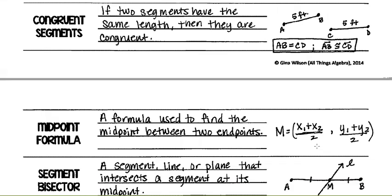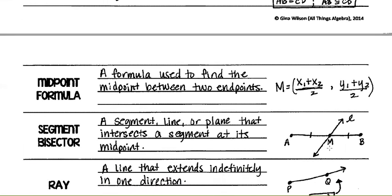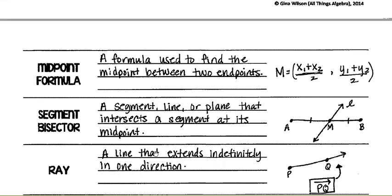Segment bisector: a segment, line, or plane that intersects a segment at its midpoint. Bisector means cut in half. So line L is cutting segment AB at its midpoint M — that is a segment bisector.